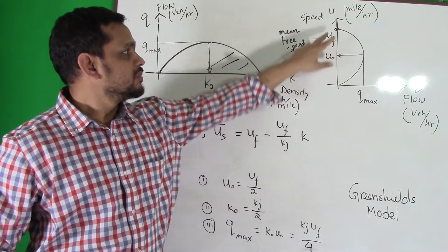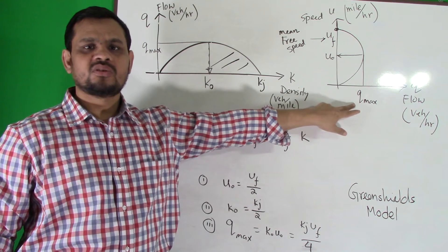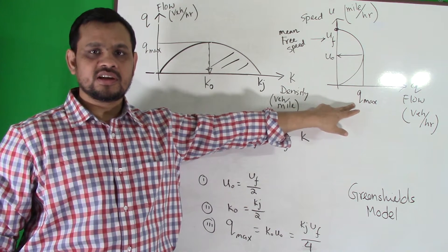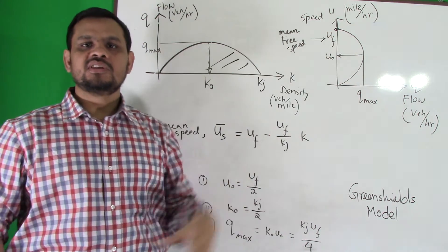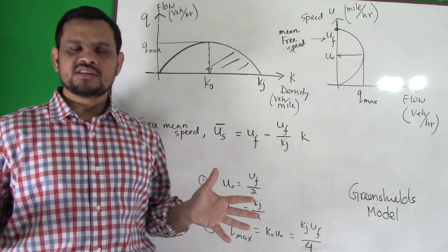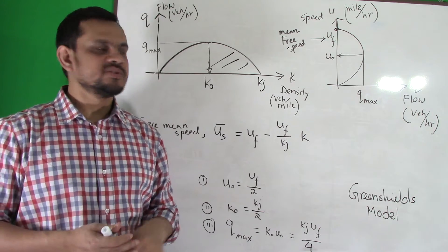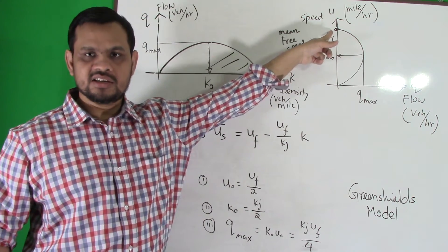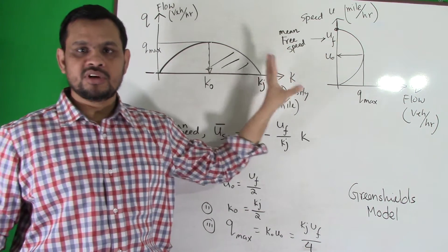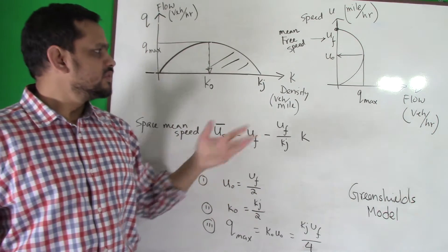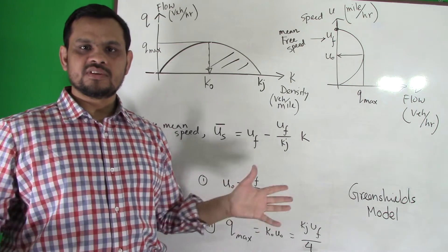For speed versus flow: at the beginning, when flow is zero — no traffic on the road — your speed should be very high. You are the only person on the road, everything is ideal, no traffic police, so you can drive at the maximum speed possible. This is called mean free speed. Memorize this term — we will need it later. Mean free speed means there is nobody else, no traffic police, no barriers, no damaged road — everything is ideal.